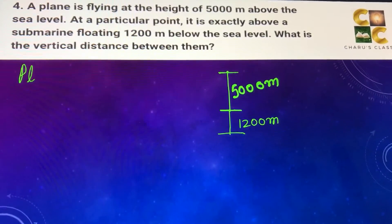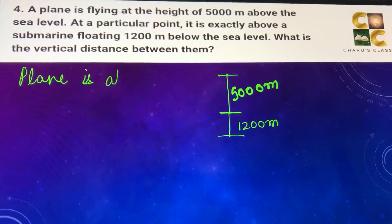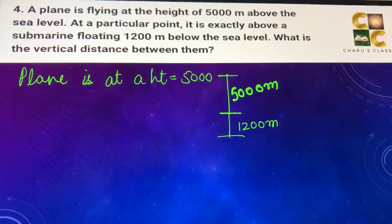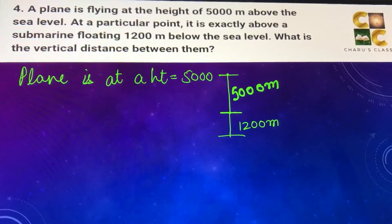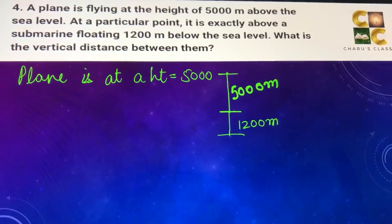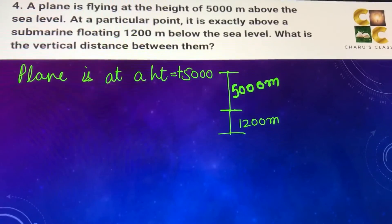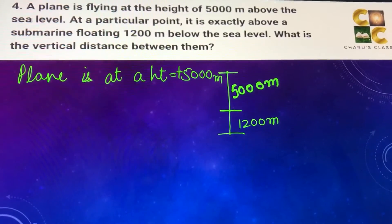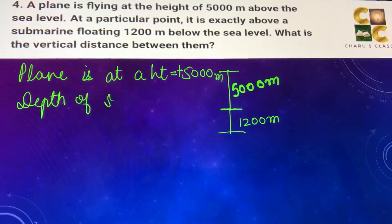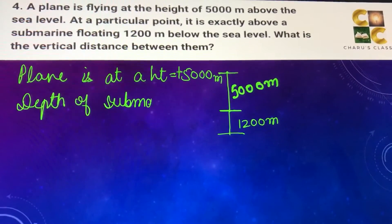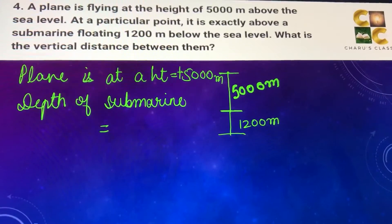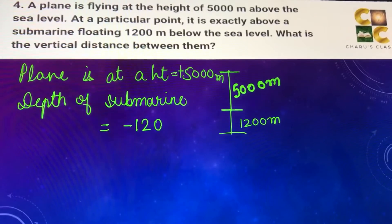The plane is at a height of 5000 meters. Whenever we take height above the ground level or sea level, we take it as positive, so this is plus 5000 meters. For the depth of the submarine — anything below the ground or sea level is taken as negative — so this is minus 1200 meters.